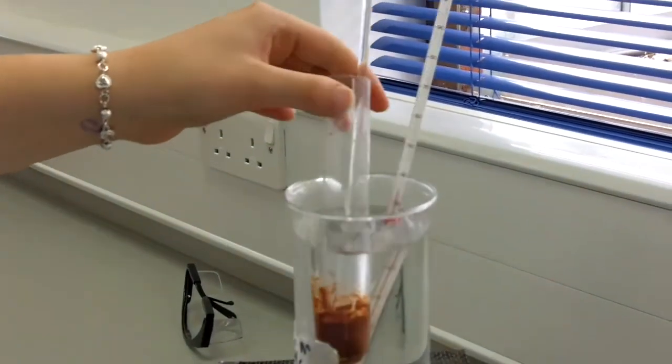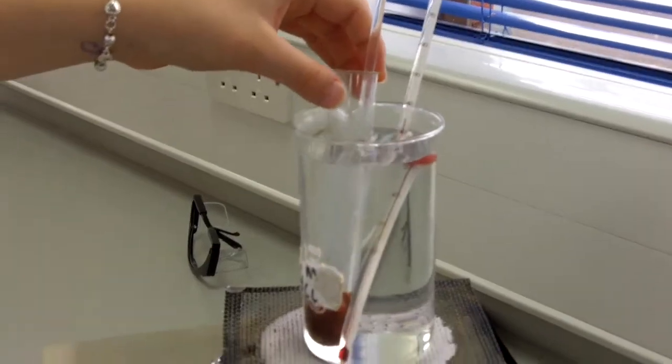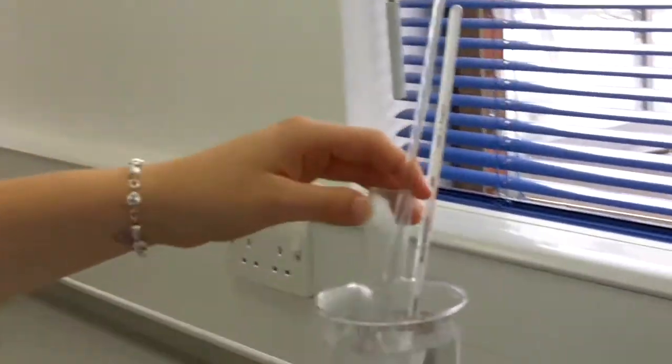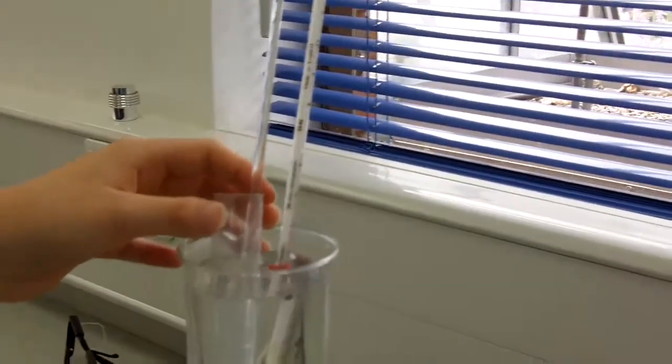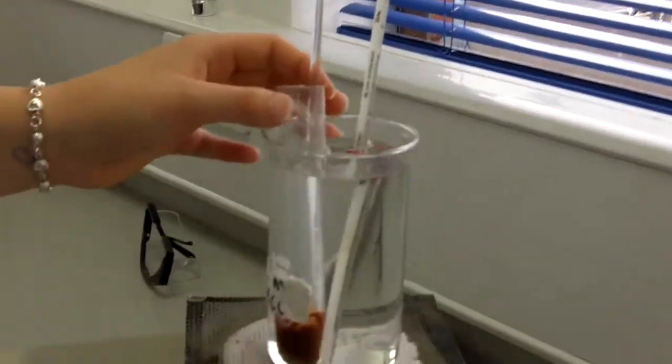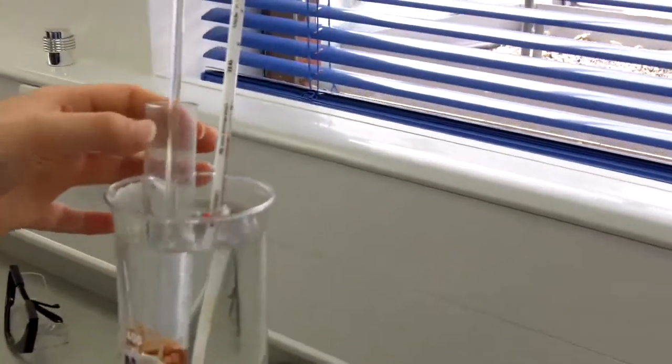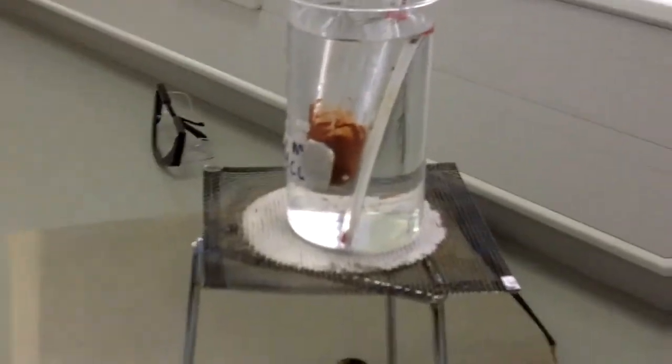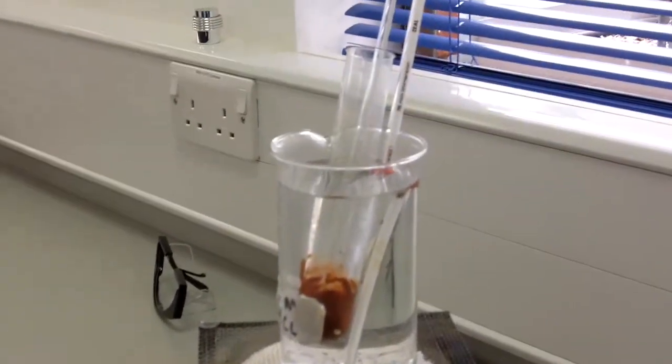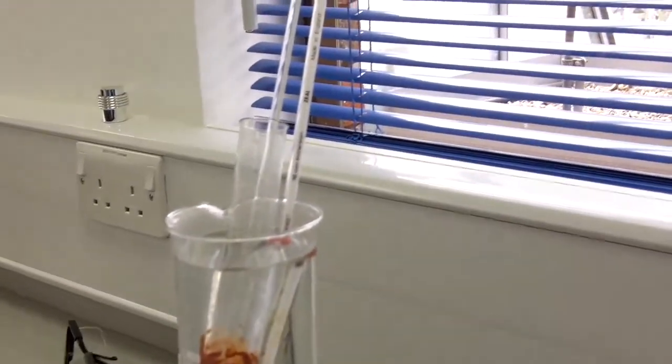The dark chocolate melted at a higher temperature at 35 degrees Celsius, whereas the white chocolate melted at 31. We think this is because the white chocolate is solely made up of cocoa butter, and the dark chocolate has cocoa butter and cocoa powder, which gives it a higher melting point.